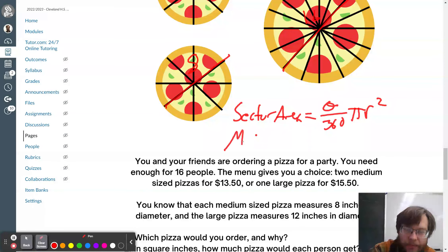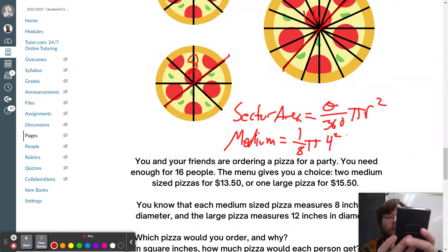So, if you order the medium, each person is going to get one-eighth. That's the same as 45 divided by 360 of pi times 4 squared. I give you an 8-inch diameter along that. You can type that in. One-eighth times pi times 4 squared. You're going to get 6.28 square inches of pizza with the medium plan.